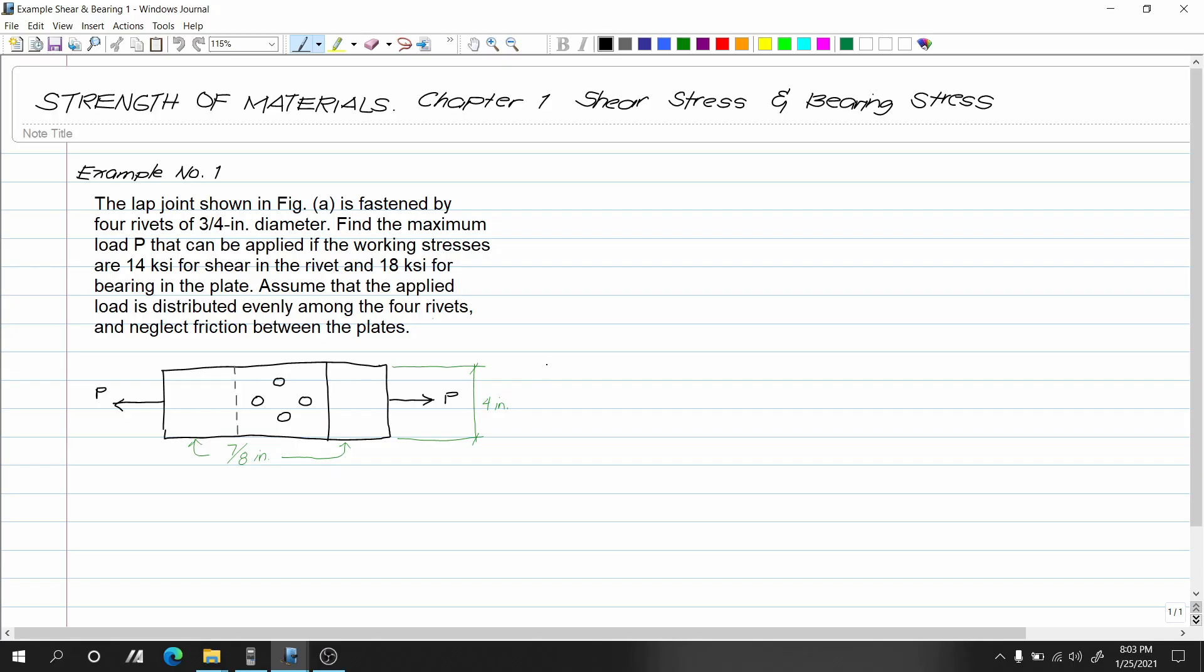So this is our problem number one for shear stress and bearing stress. The lock joint shown in figure A is fastened by four rivets of 3/4 inch diameter. Find the maximum load P that can be applied if the working stresses are 14 KSI for shear in the rivet, and 18 KSI for bearing in the plate. Assume that the applied load is distributed evenly among the four rivets and neglect friction between the plates.